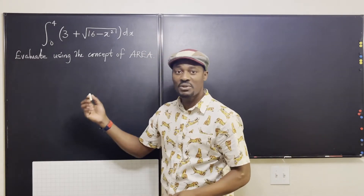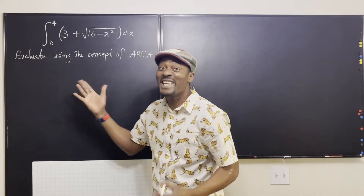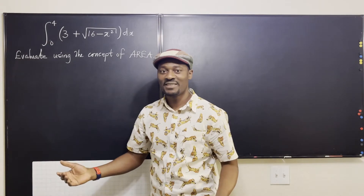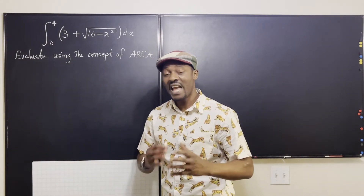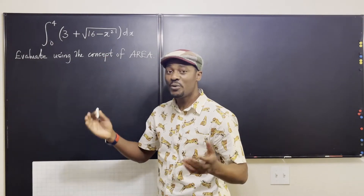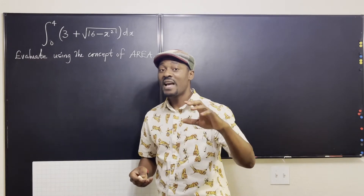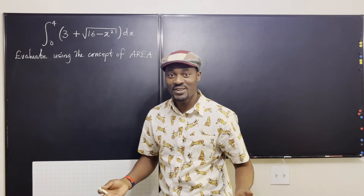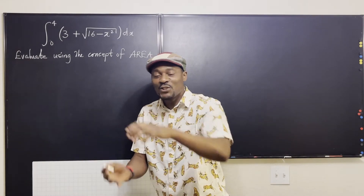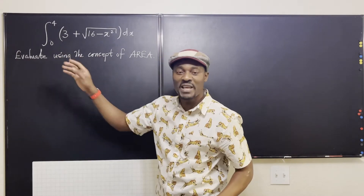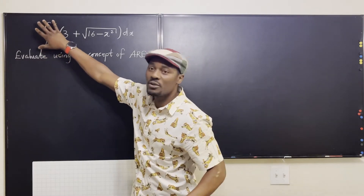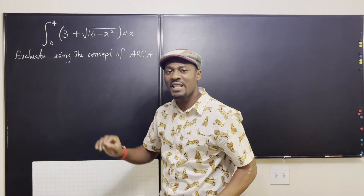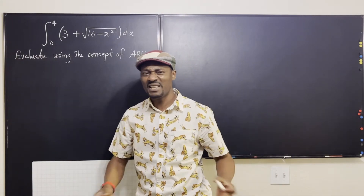If it says the concept of area, just do the concept of area, because this is even a lot easier than whatever else you're trying to do. When you're integrating any expression, what you're doing is actually taking the area bounded between that curve and the x-axis. That's what we do when we integrate — you're just finding areas. So if you look at this expression, we can actually break it down into the integral of 3 plus the integral of the other expression.